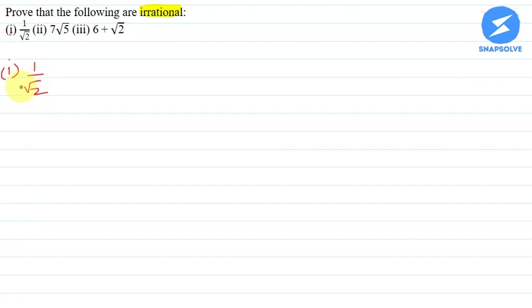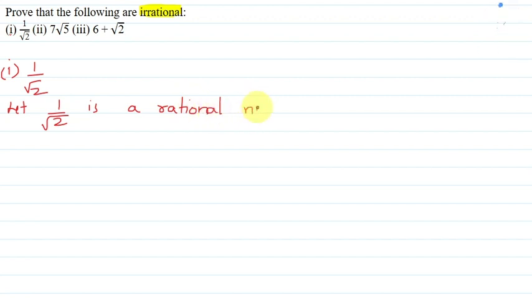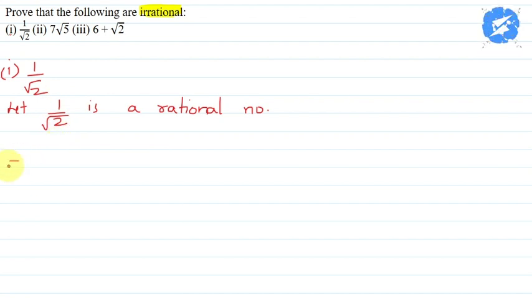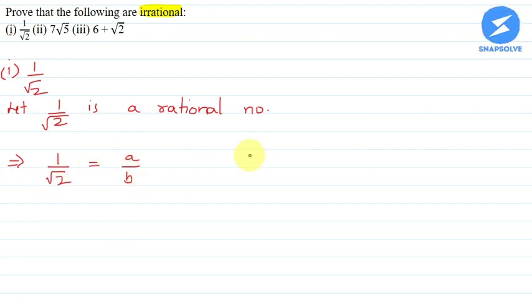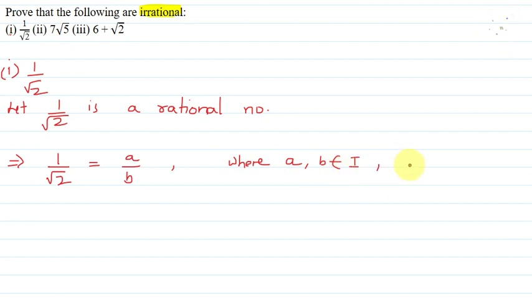So what will we do? Let us assume that 1 by root 2 is a rational number. If 1 by root 2 is a rational number, that means 1 by root 2 can be expressed in the form of a upon b, where a and b are integers and b is not equal to 0.